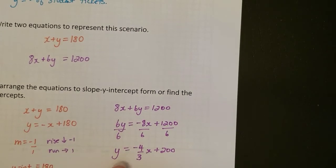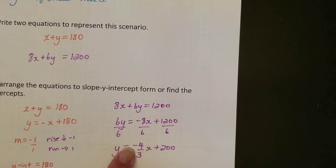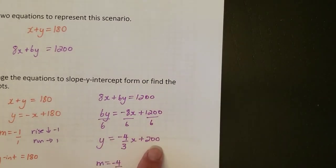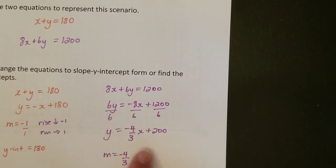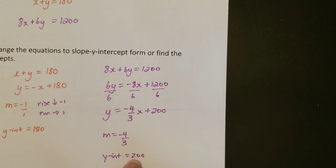So now I get Y equals 8 over 6 reduces to 4 over 3, and that's still negative. And 1200 over 6 is 200. So now I have a slope of negative 4 over 3 and a Y-intercept of 200 for this one.